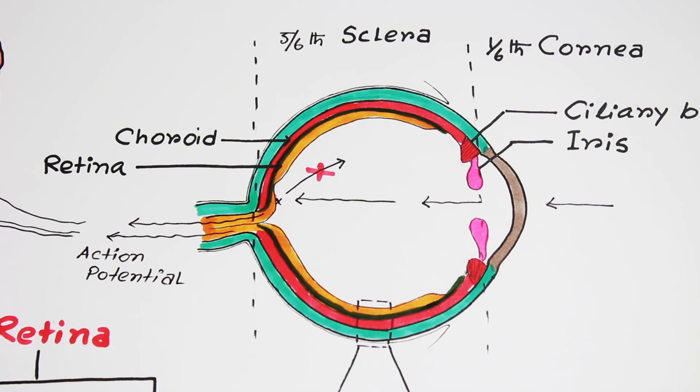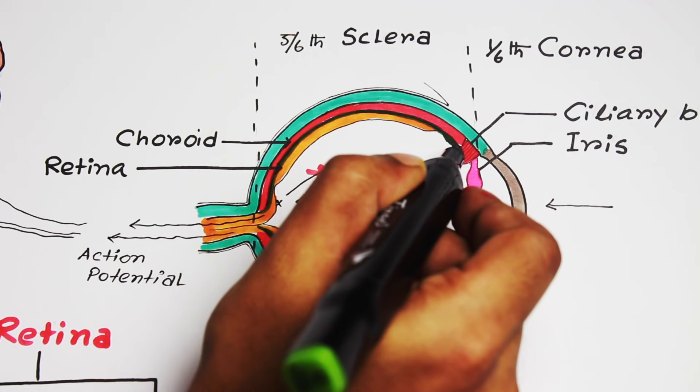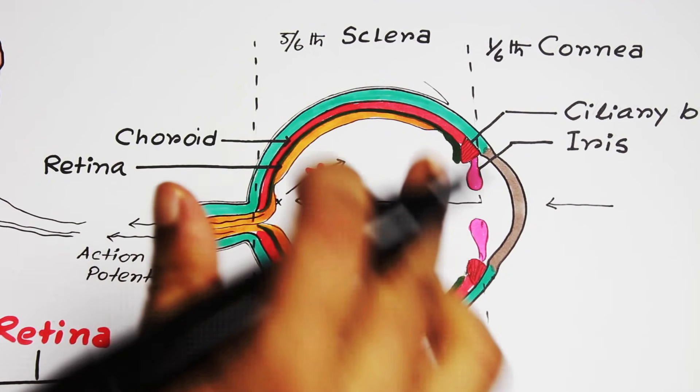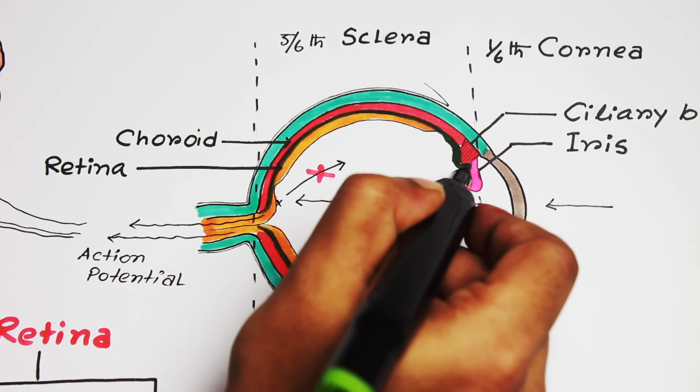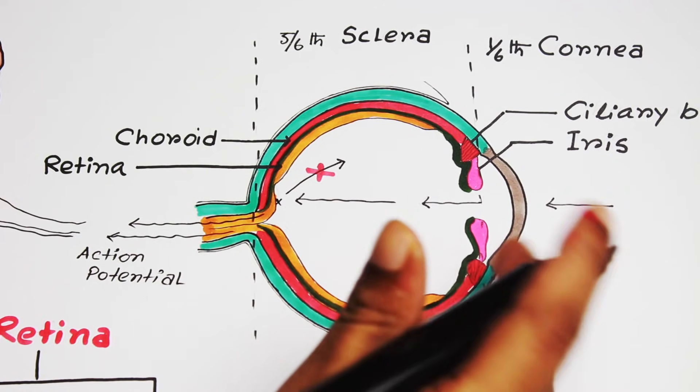Now, this pigmented layer covers all the choroid layer and extends forward just behind the ciliary body and then behind the iris, and finally stops here. It is not going beyond this area.